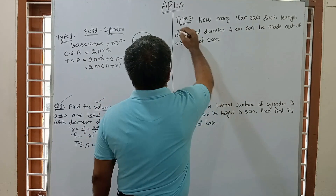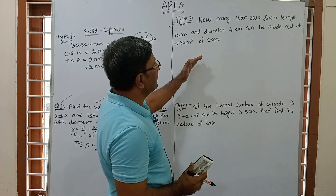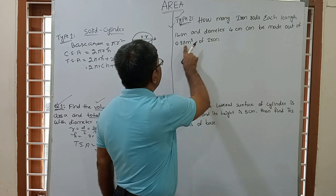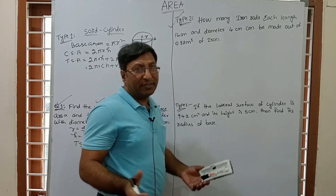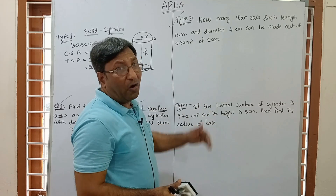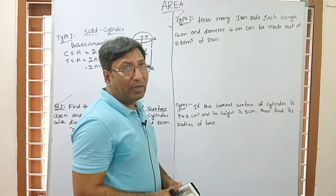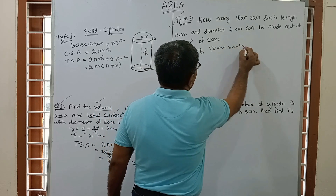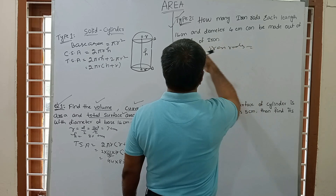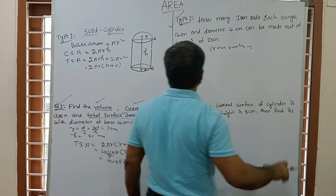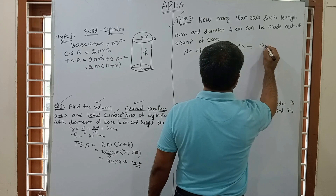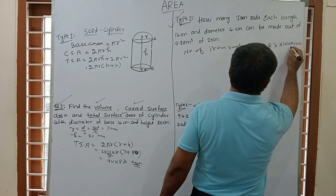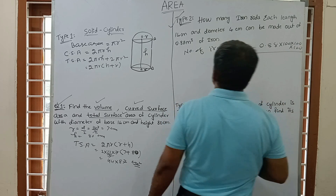Now see the second type of question: How many iron rods, each of length 14 cm and diameter 4 cm, can be made out of 0.88 metre cube of iron? For this type of question, the basic technique is: number of rods = volume of the larger piece divided by volume of one smaller rod. Volume of iron is given as 0.88 m³.